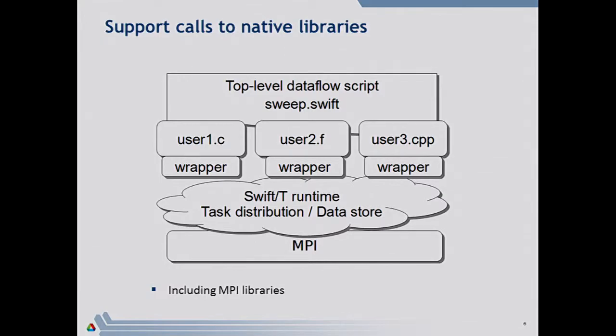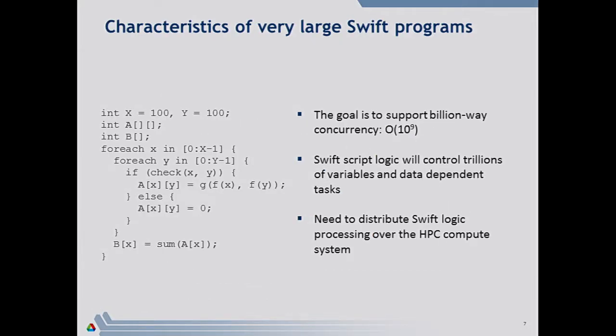The model has a top-level dataflow script orchestrating all of the parallelism and concurrency. User libraries — C, Fortran, or C++ — get linked into our runtime, and the runtime uses MPI to communicate at runtime. You Q-sub the whole thing, everything's packaged together, and it runs. The goal was to support billion-way concurrency for future systems. We needed to spit out tasks fast and move data around fast, so we basically needed to build a parallel interpreter for Swift scripts — controlling billions of tasks and trillions of variables. In this case, the Swift logic is part of the MPI program, so we distribute all of the processing.